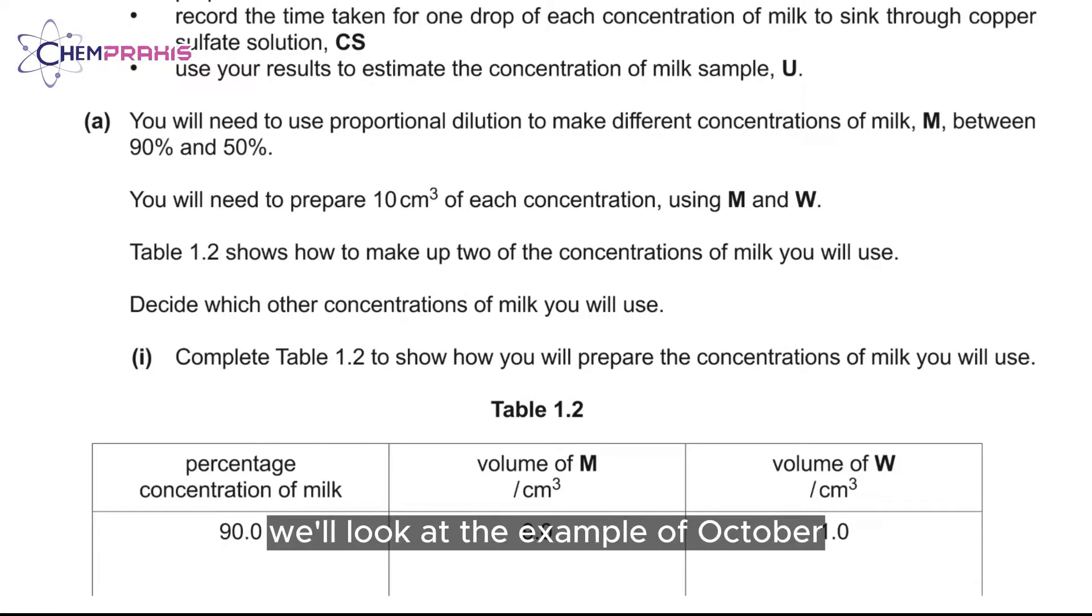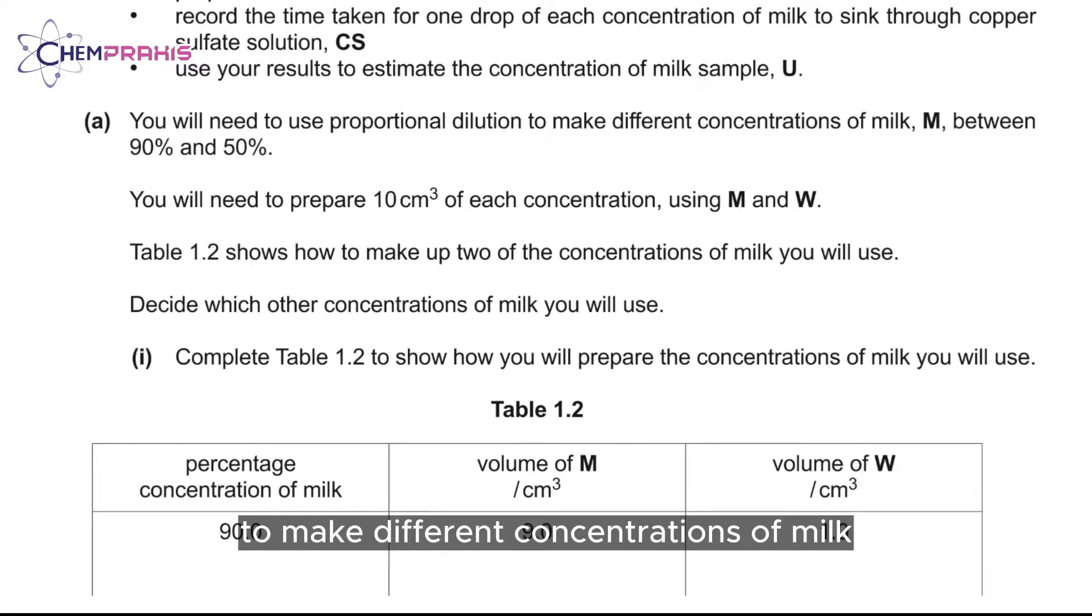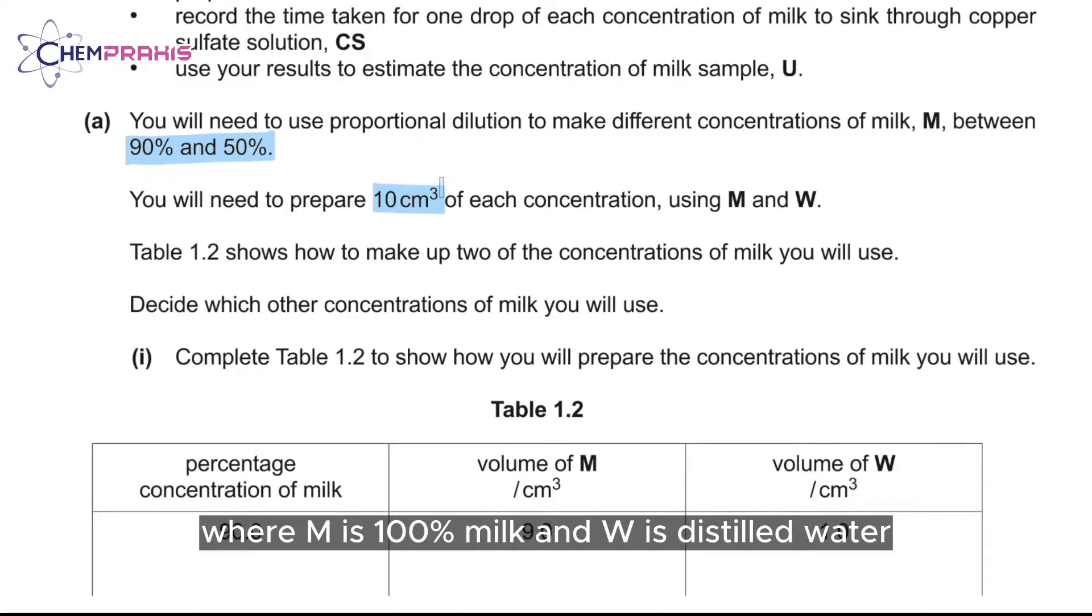For simple dilution, we'll look at the example of October-November 2020 paper three bearing one. In this example, we'll carry out simple dilution to make different concentrations of milk between concentrations of 90% and 50%. You'll need to prepare 10 cm³ of each concentration using M and W, where M is 100% milk and W is distilled water.